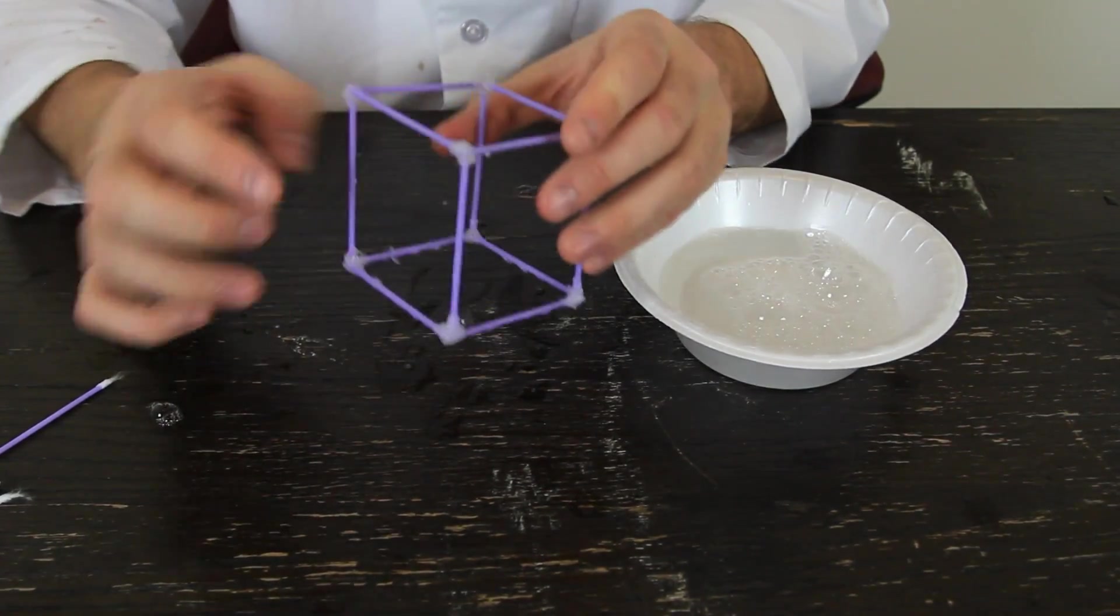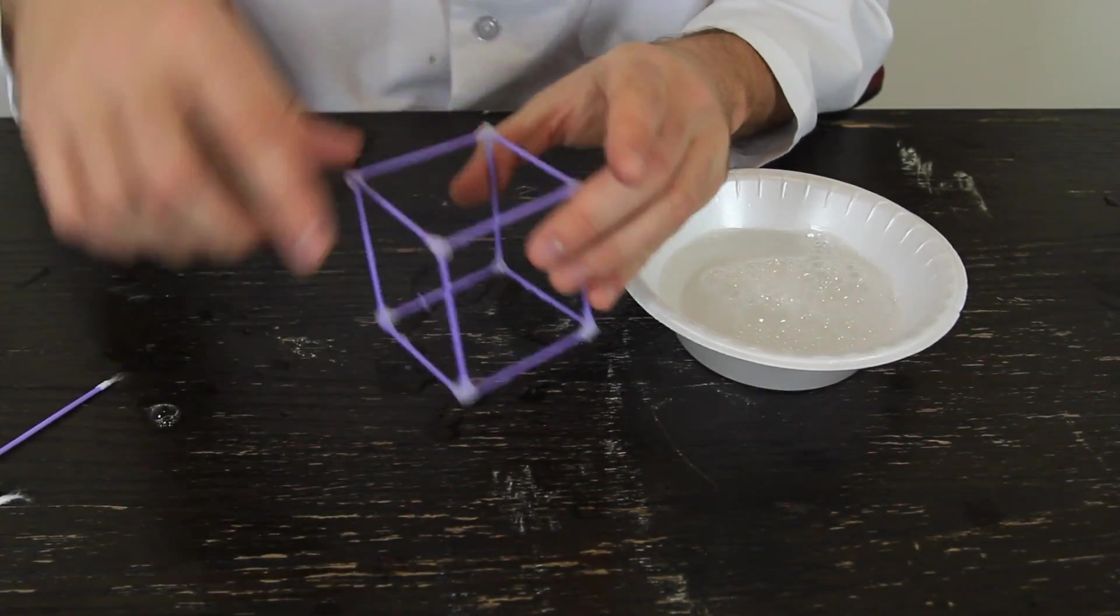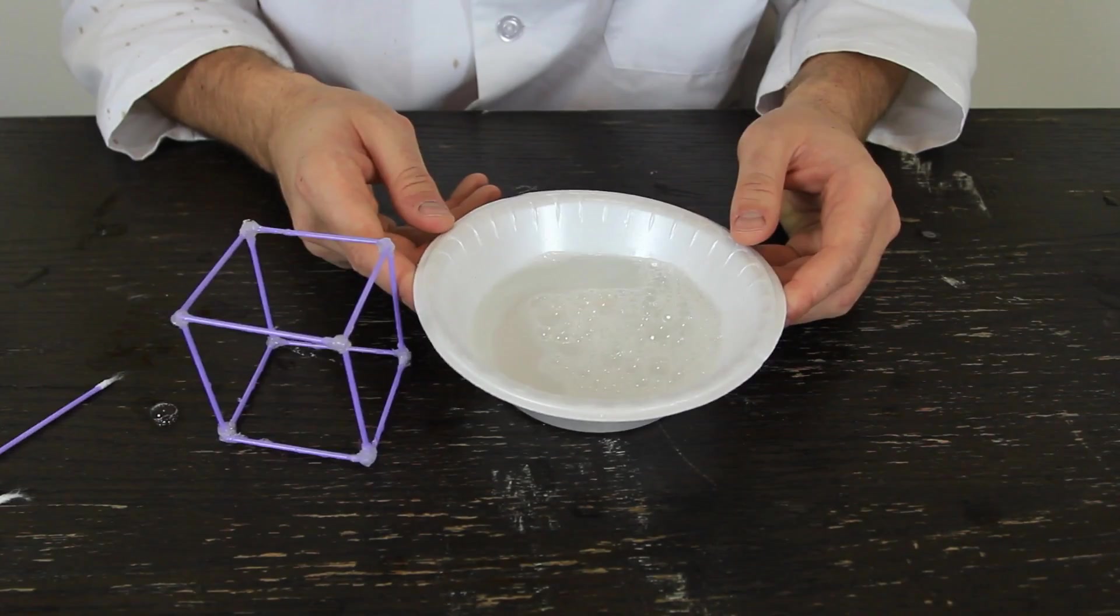It is super simple, just make a square, glue them together, then this four, and then top ones. Very simple to do. And then we're going to need soap.